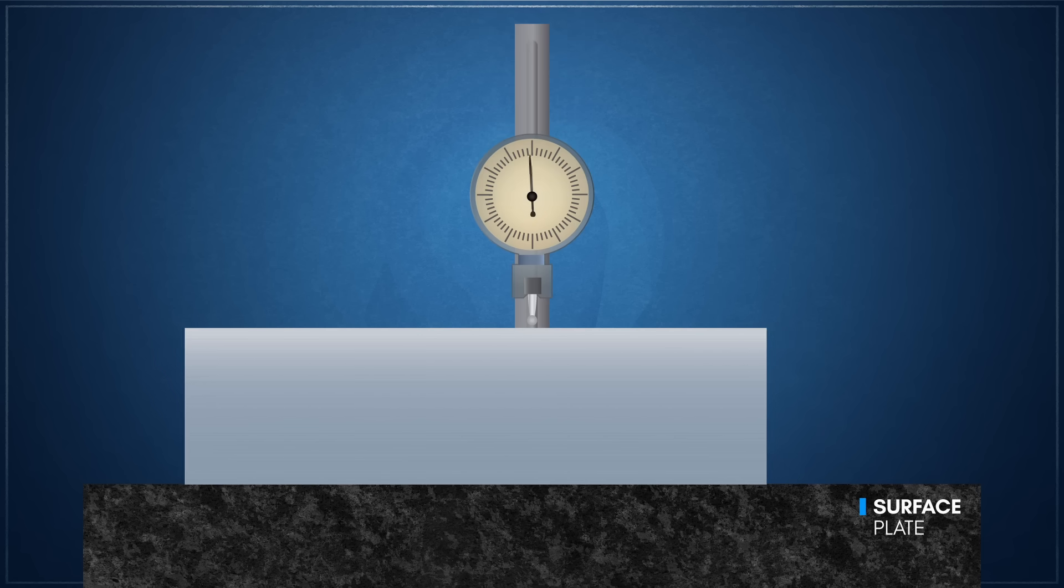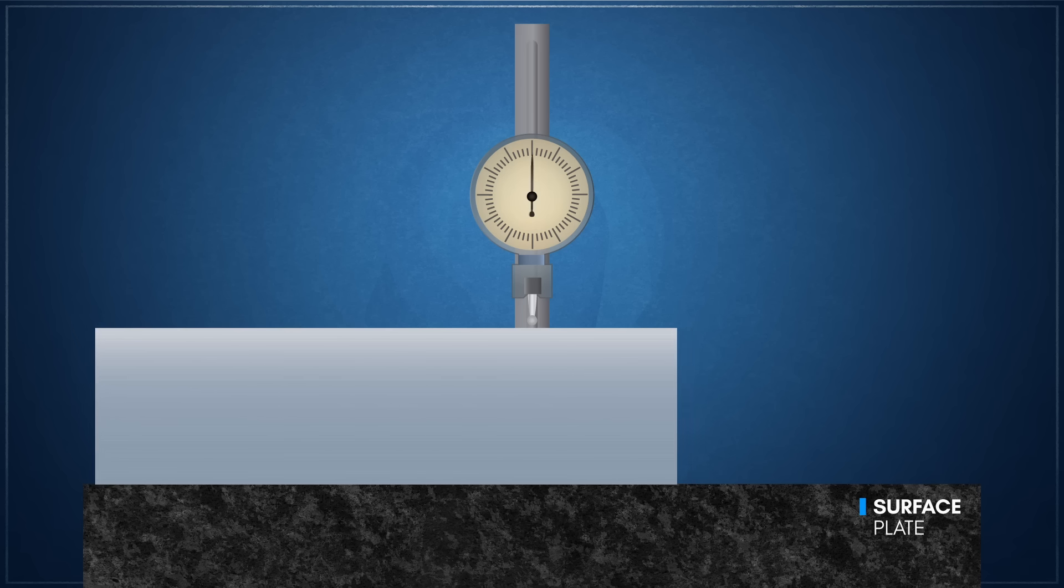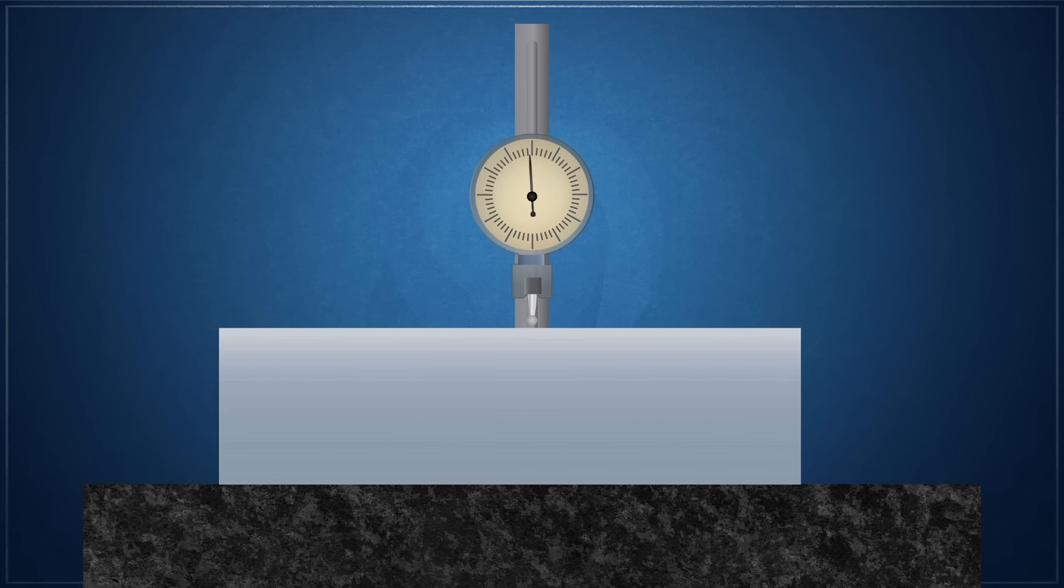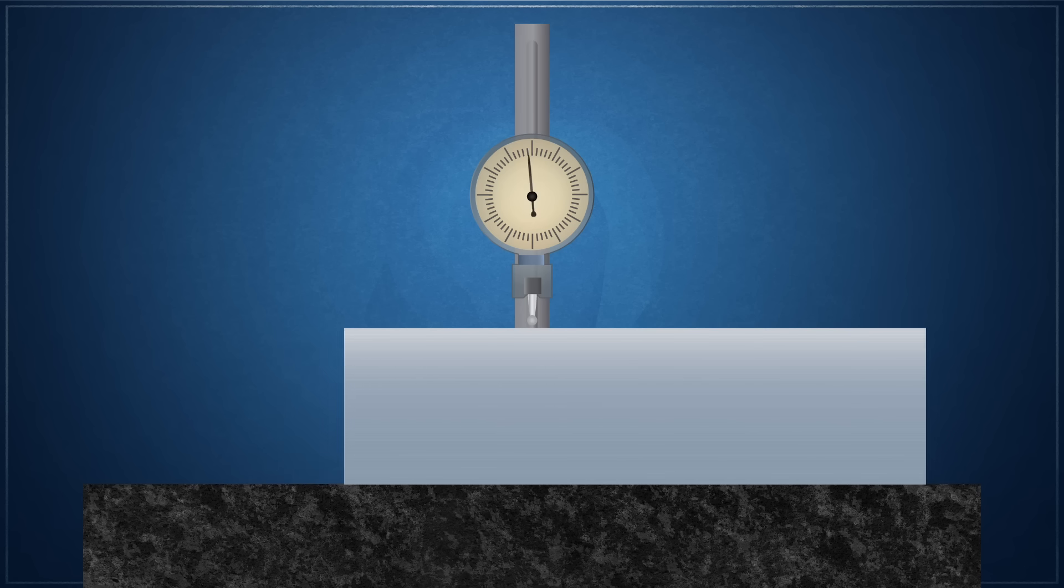However, the problem with this method is that you're really only testing how parallel a surface is to the surface plate, and not actually testing for flatness. Furthermore, not every part can be fixtured for this method. Because flatness is a property that's independent of other dimensions, it must be measured in a similar manner.